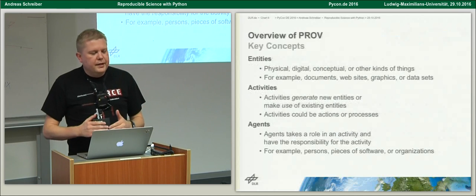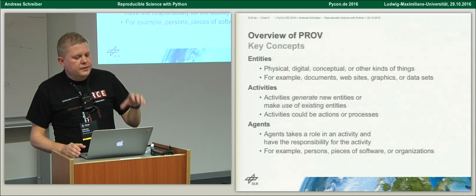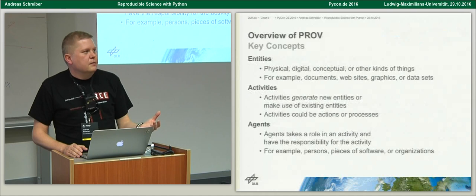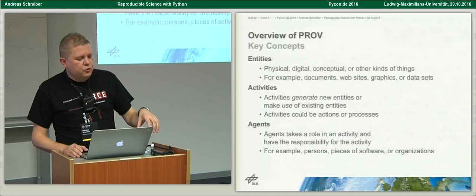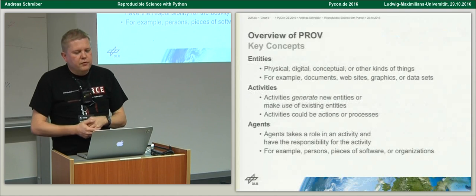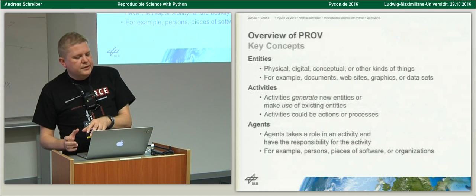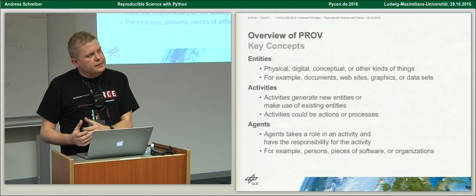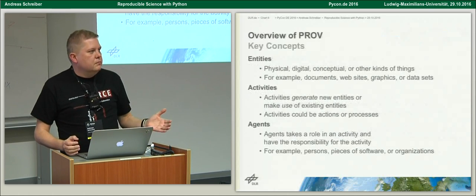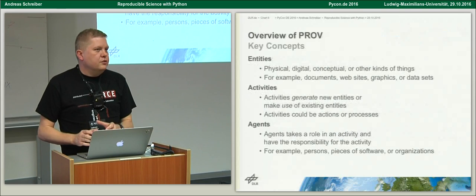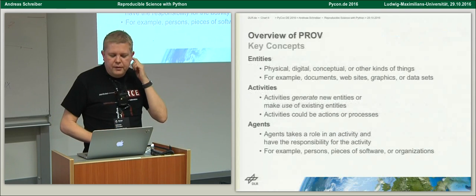An entity can be a document, a website, a dataset. We are interested in entities like the result file — we want to know the history of how this file was produced. Usually things like files are produced by certain activities, like algorithms or workflows. Activities generate new entities and use existing entities. We also have agents — the human scientist, other people, organizations, or pieces of software.